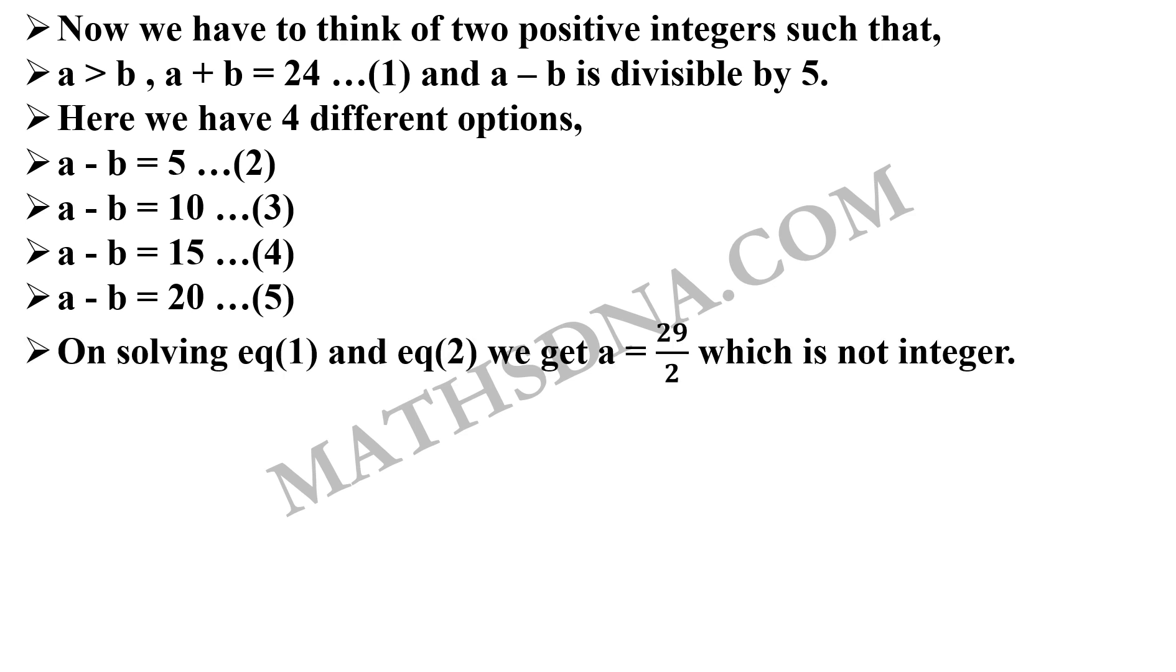For equation 1 and 2, we get the value of a is 29 by 2. We directly add both of them which is not an integer. So, it cannot be correct because we need positive integers. Secondly, on simplifying equation 1 and 3, we get a is 17 and b is 7. Both are integers. So, this can be one pair for our a and b.